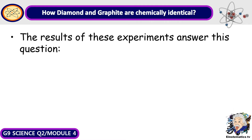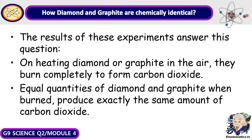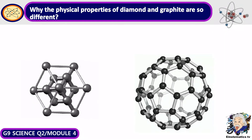As you can see, the physical properties of diamond and graphite are very different. So how did scientists determine that both graphite and diamond have identical chemical nature? The results of experiments answer this question. They have the same chemical makeup because when heating diamond or graphite in air, they both burn completely to form carbon dioxide, and equal quantities of diamond and graphite when burned produce exactly the same amount of carbon dioxide. Hence, it is concluded that diamond and graphite are chemically identical.